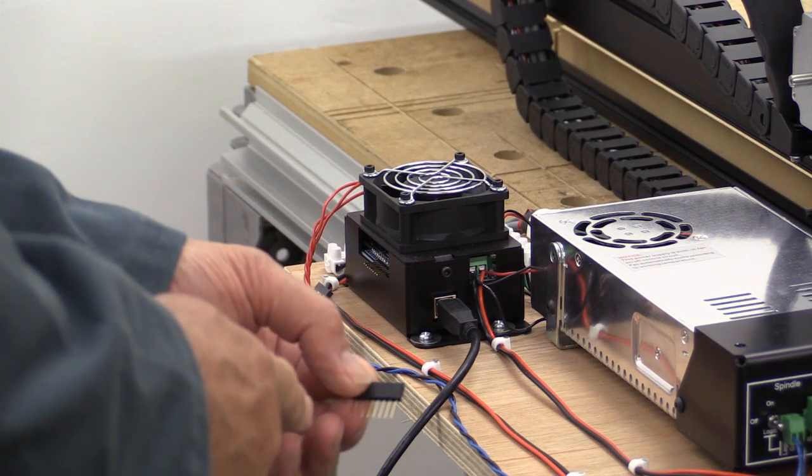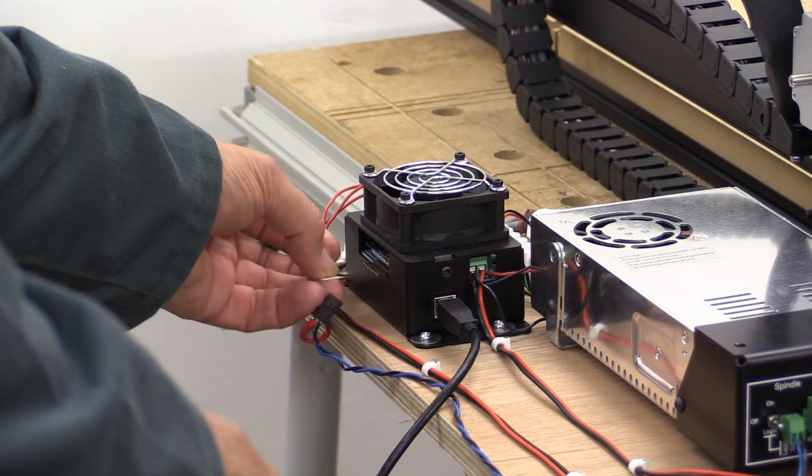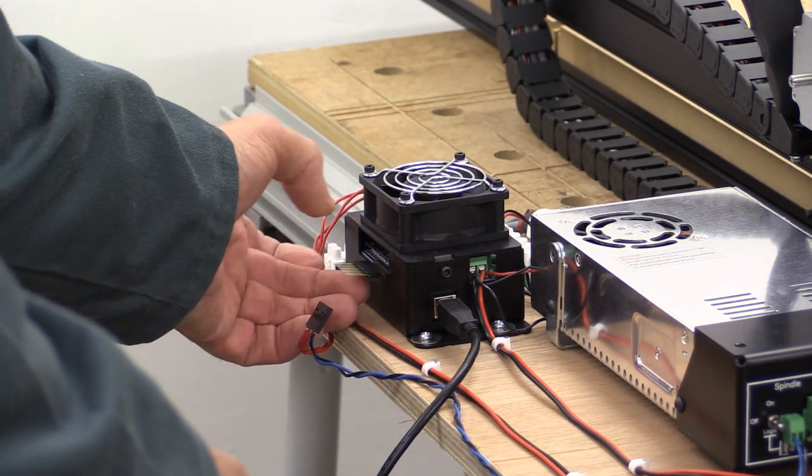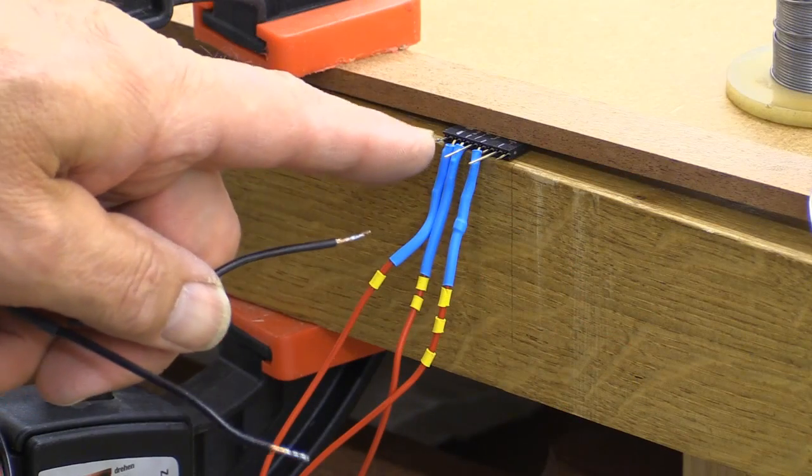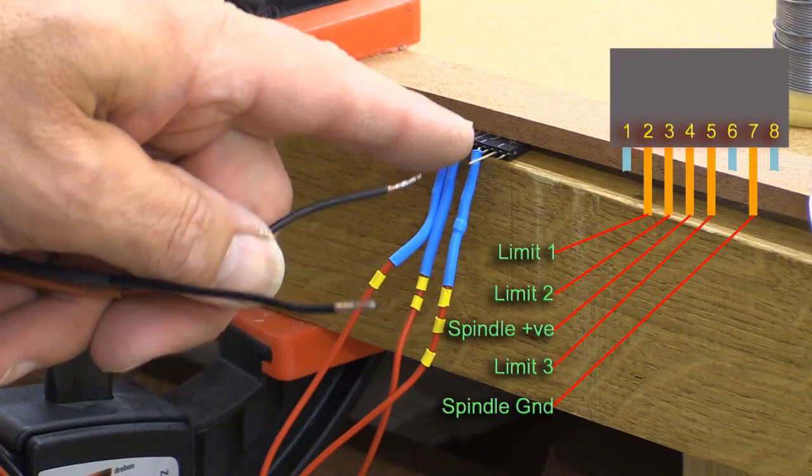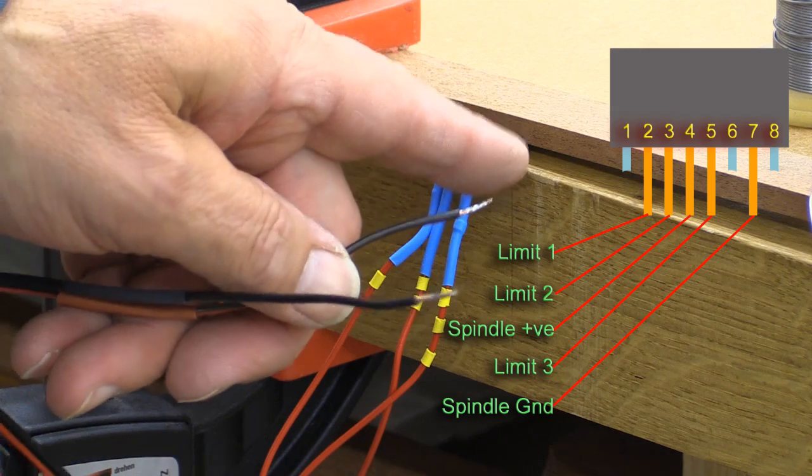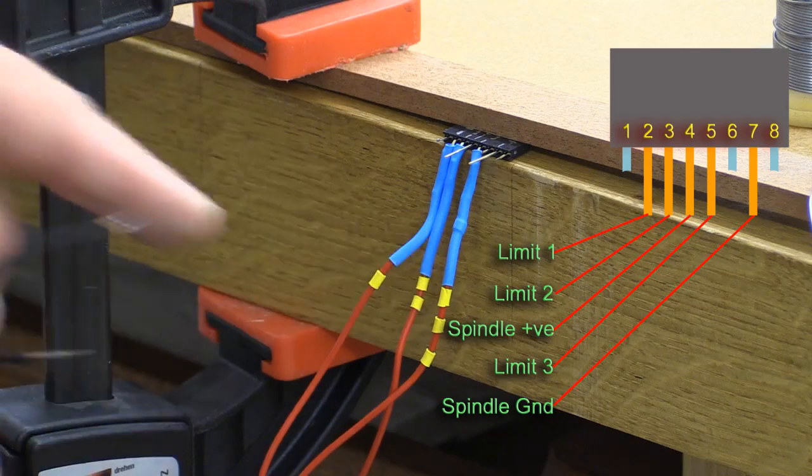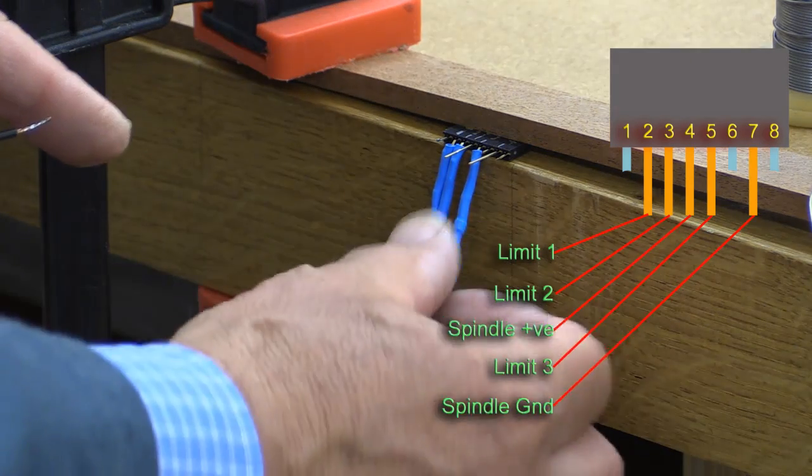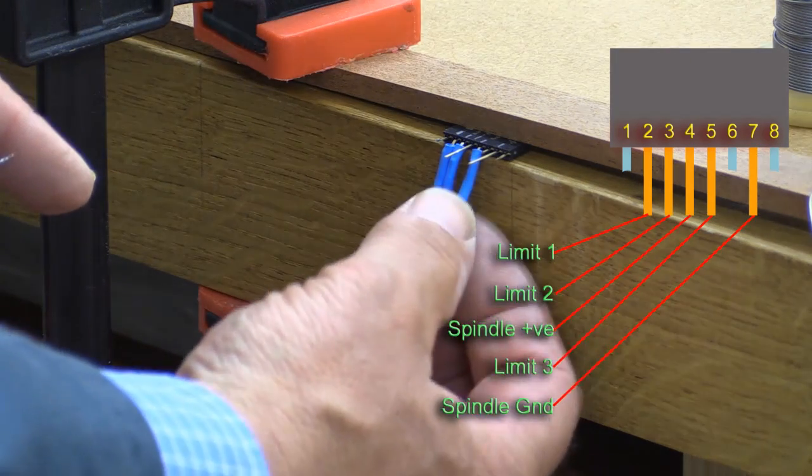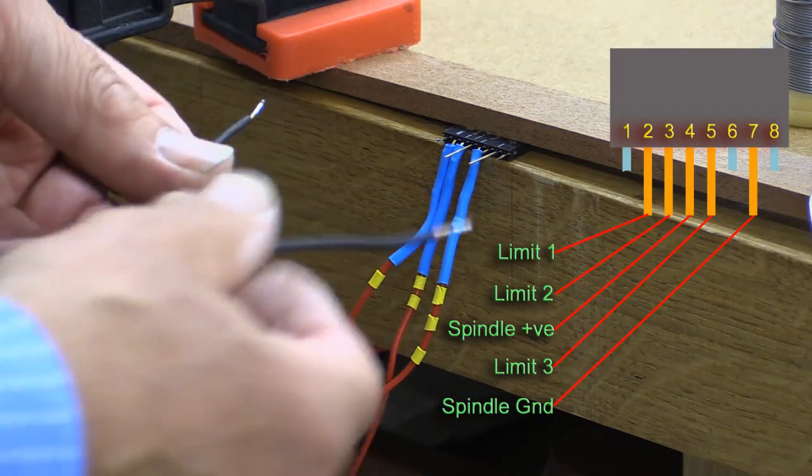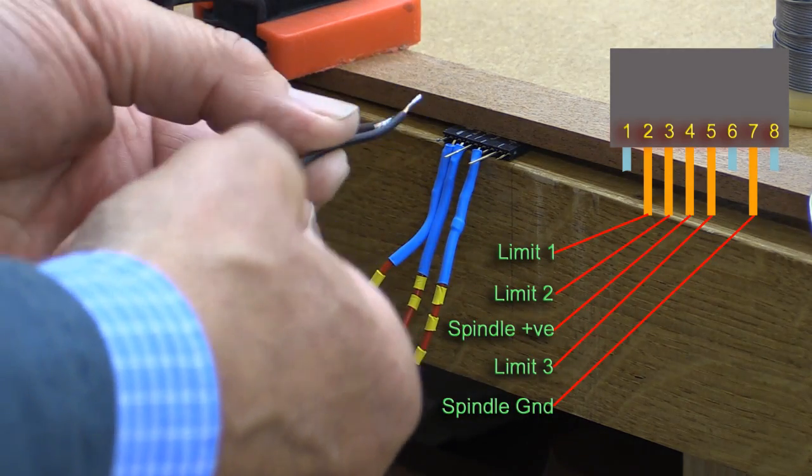That will make a better job of that connection to that controller board. As you may be able to see, I've cut off the three connectors that I don't need, so they're out of the way. As I've soldered on these others, I've then bent them down and then covered them in some shrink wrap. I've just got two left to do now, and that's the power to the spindle.